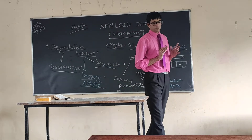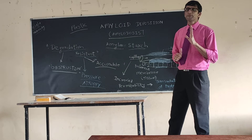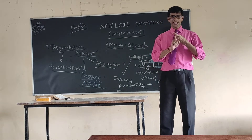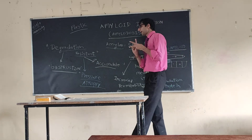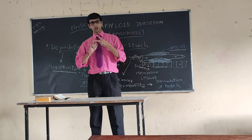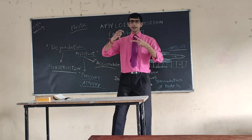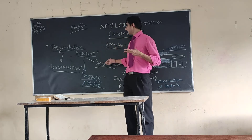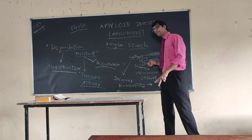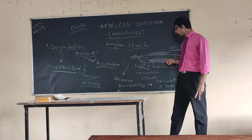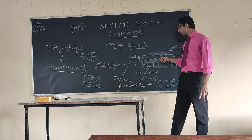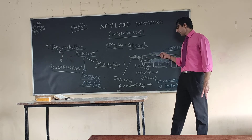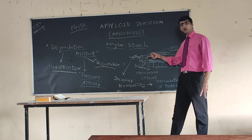In amyloidosis we have to understand that there is a non-degradable substance which is wax-like. Due to its non-degradable nature, it keeps on piling up like plastic as it cannot get degraded. Inside the body, it starts getting accumulated and its favorite position is the basement membrane of the artery. Due to accumulation, it compresses the surrounding tissue and artery, and occasionally occludes the artery.